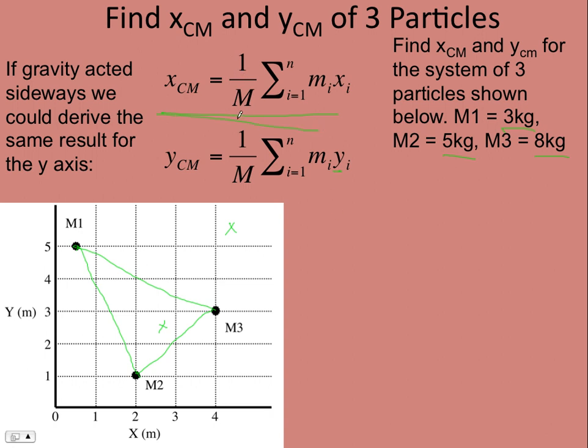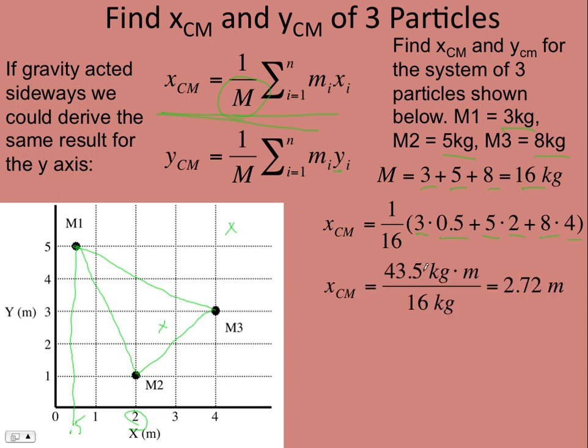So how would we do this? Well, we want to apply this equation. So I need to know the total mass. Well, that's easy, right? Just add up all the masses, 16 kilograms. And then, so it's 1 over 16 times m1, x1. And m1 is 3 kilograms, and x1 is 0.5. And then m2, x2. So m2 is 5 kilograms, and x2 is 2. And m3 times 4, so 8 times 4. Work that out. And you get 2.72 meters for x center mass.